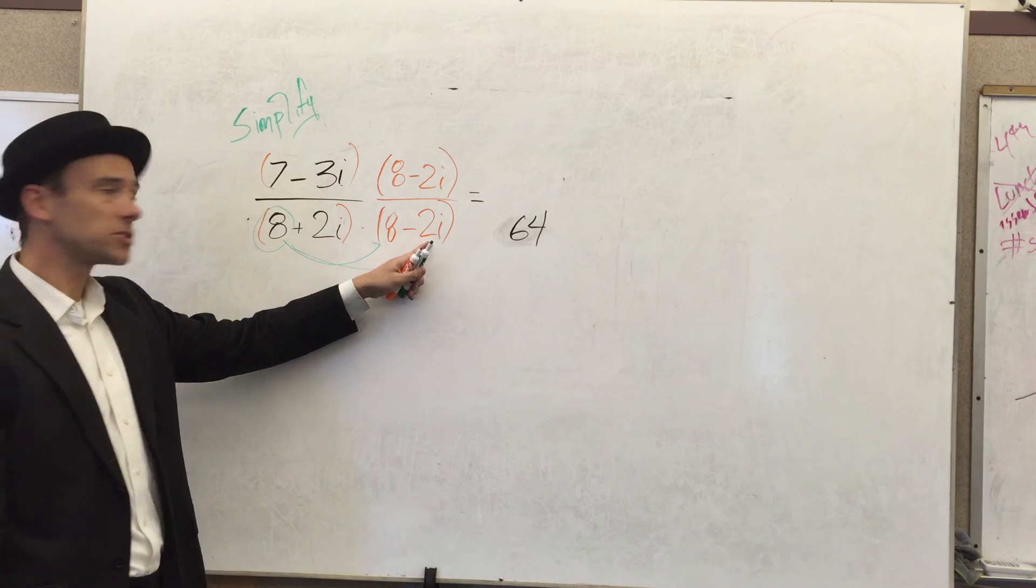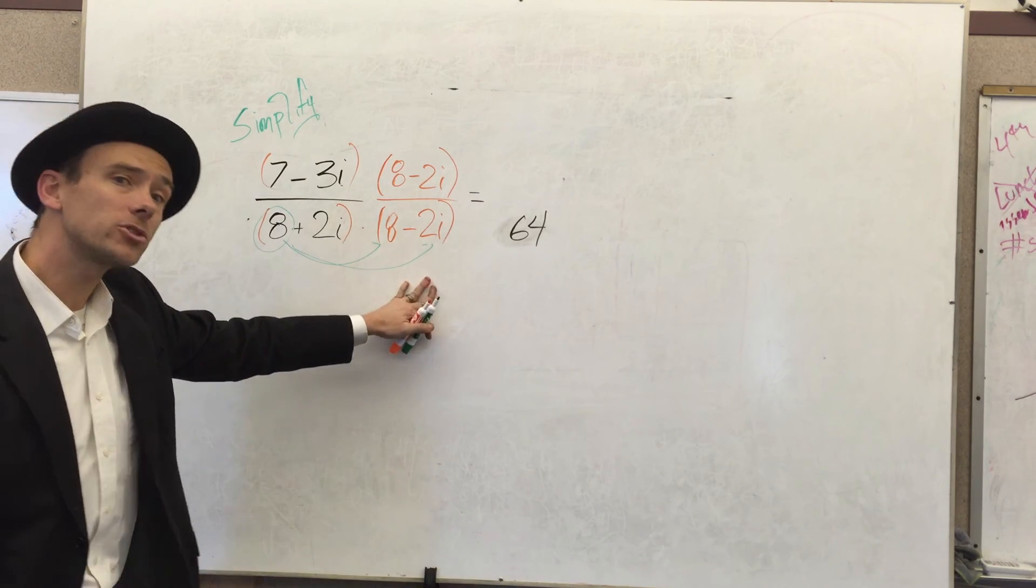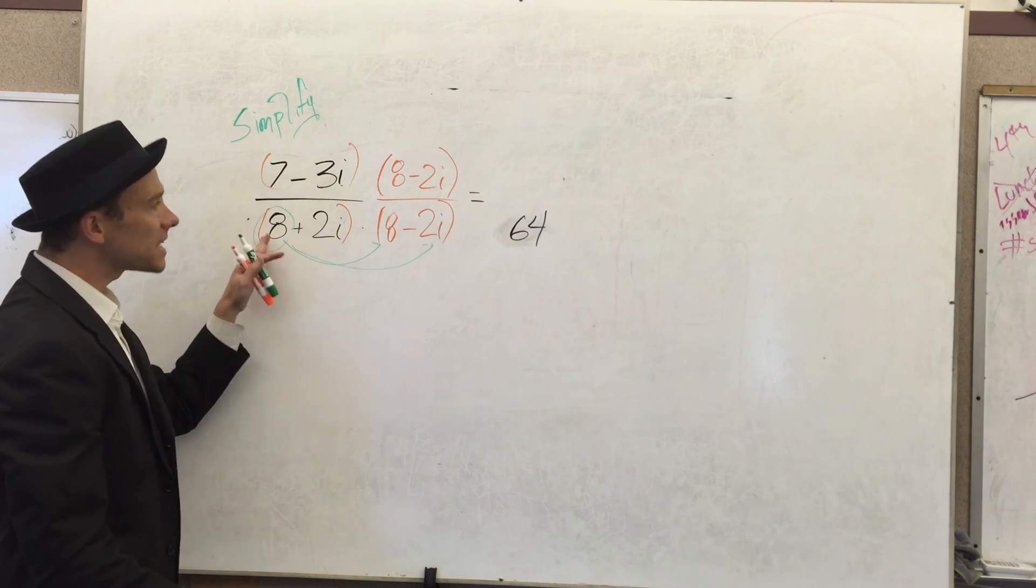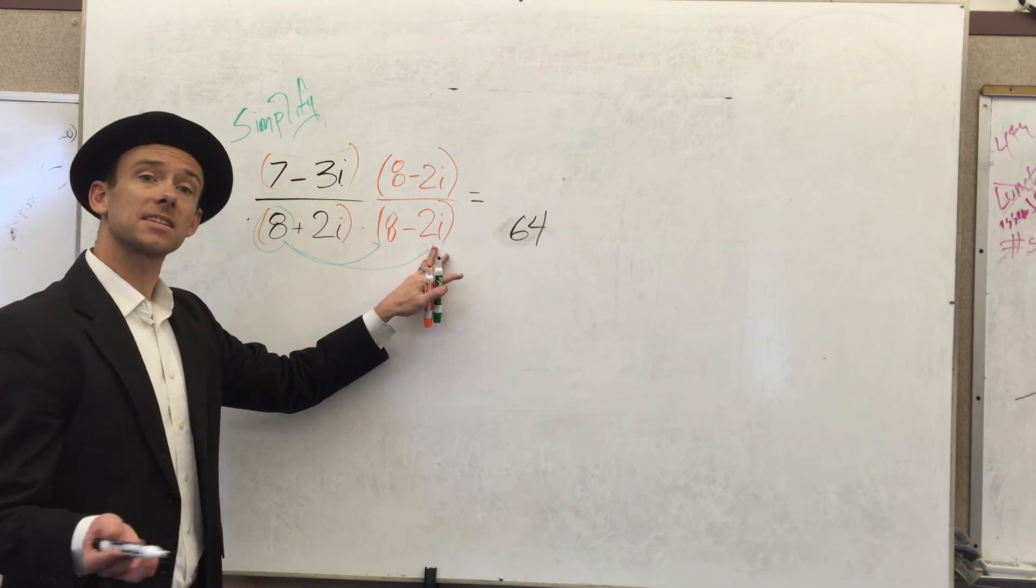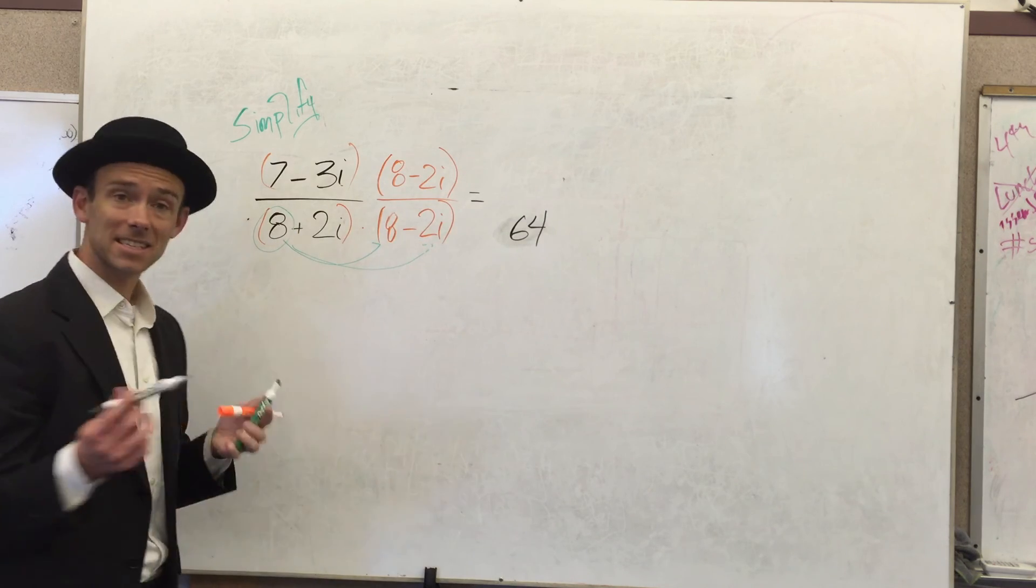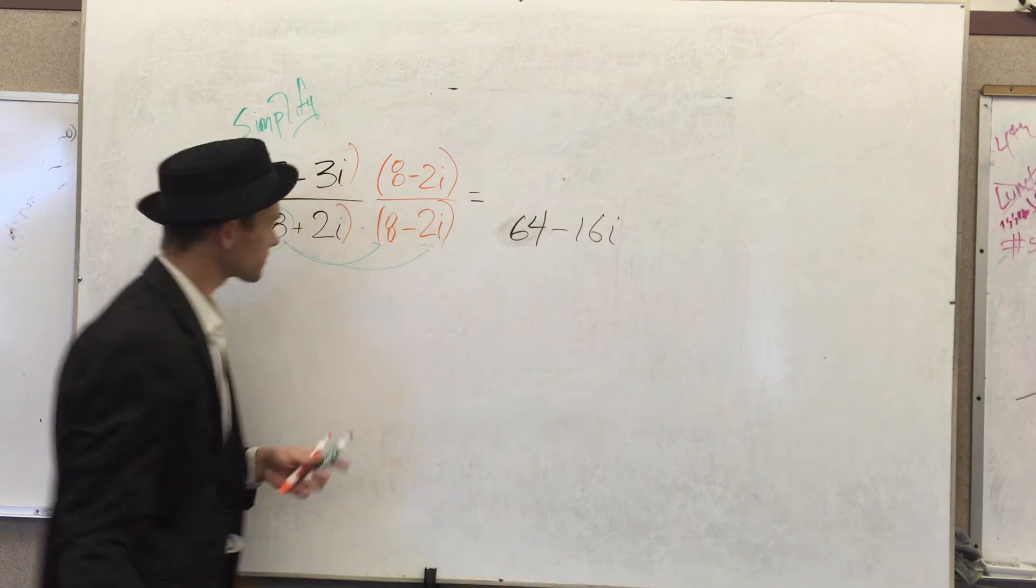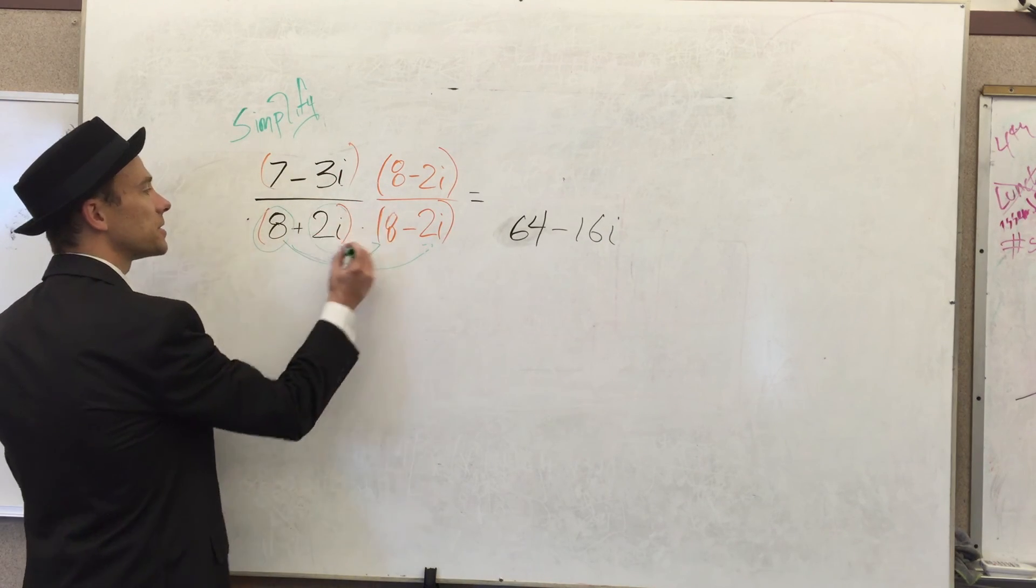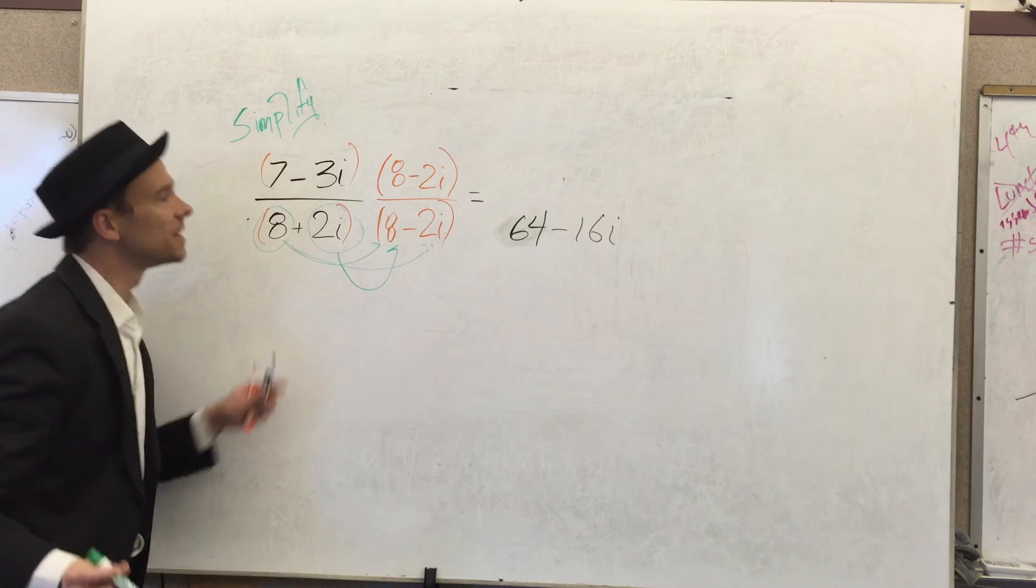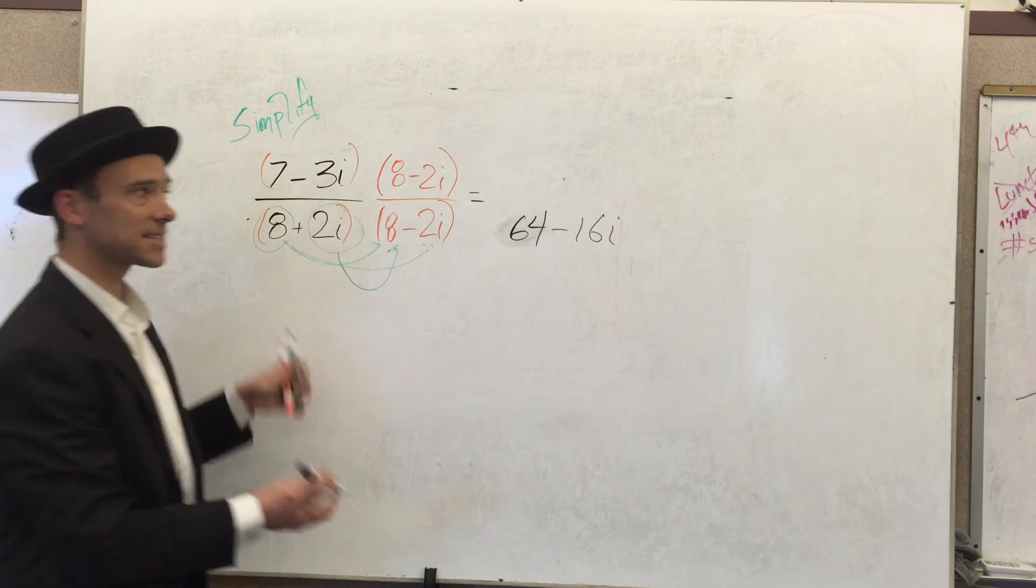8 times negative 2i. In this instance, i is going to be treated much like we treat variables. So just like 8 times 2x is 16x, 8 times 2i is 16i. And we have that subtraction sign, so minus 16i.